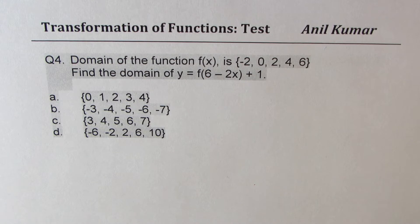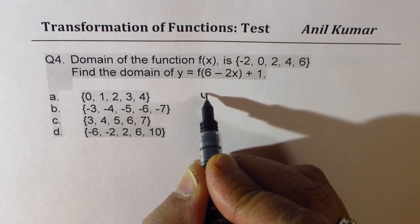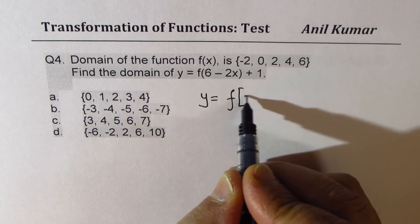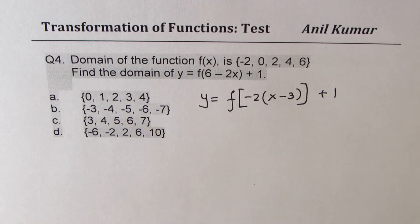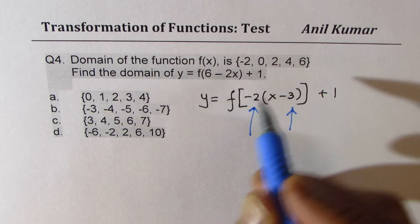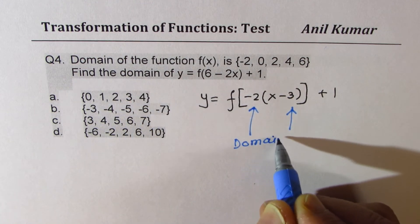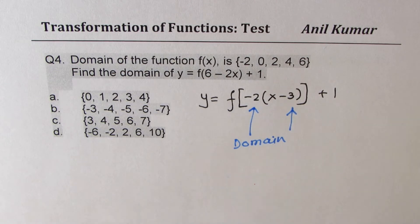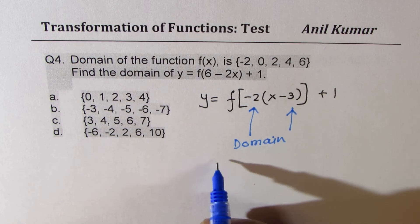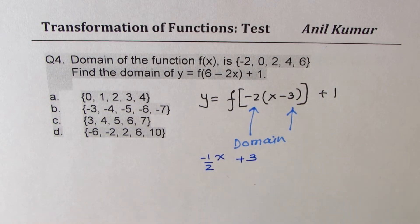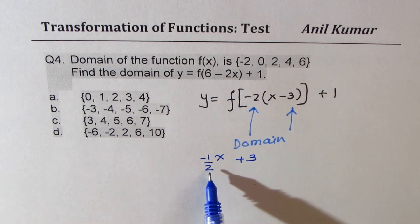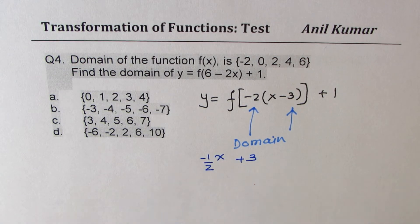Question number 4. Domain of function is given to you. Find domain of transform function. So all the x values we are looking into. So again, we'll rewrite this function. We could write this as taking minus 2 common. We get x minus 3. So whenever you have that kind of function, you have to rearrange. Otherwise, you might get wrong answer. Now, these two will contribute to the domain. 1 is for range. So let us see how domain changes. So it gets multiplied by half, minus half rather. So the x values get multiplied by minus half. And that 3 indicates that you have to add 3 to it. So each value here has to be multiplied by minus half. And then you have to add 3 to it. That is how you are going to get the solution.